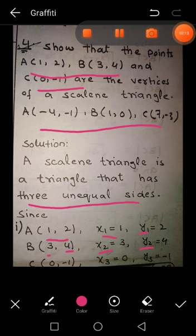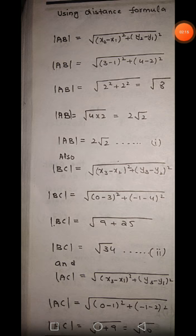First of all, we will find side AB using the distance formula: AB = √[(x2 − x1)² + (y2 − y1)²]. We put the values of x2, x1, y2, and y1 into this formula.